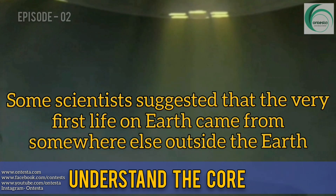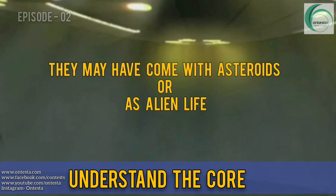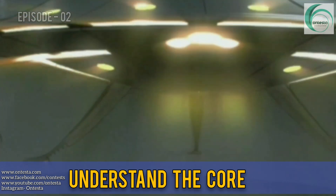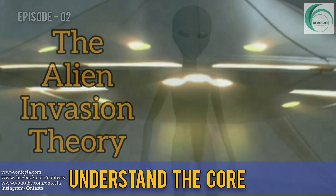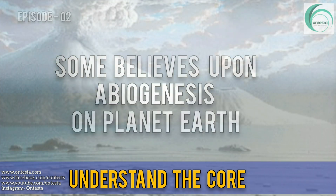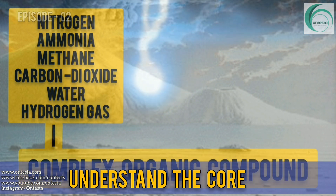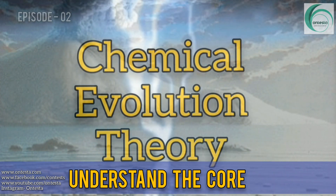Some scientists suggested that the very first life on Earth came from somewhere else outside the Earth — perhaps from asteroids or as alien life — and this is called the alien invasion theory. Others believe in abiogenesis on planet Earth. The primitive components were nitrogen, ammonia, methane, carbon dioxide, water, and hydrogen, which ultimately formed complex organic compounds. This is called the chemical evolution theory.